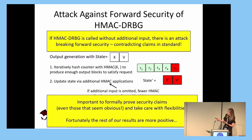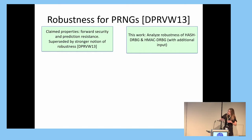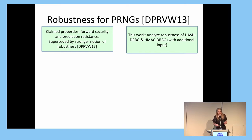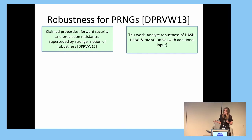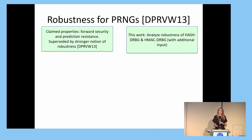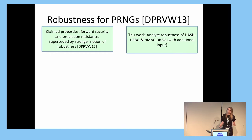That's our surprising negative result, and fortunately the rest of the results in this section are more positive. The standard targets forward security and prediction resistance, but our understanding of what a good generator should achieve has moved on a lot since then. These days, the property we really want from a good PRNG is this notion of robustness, first formalized by Dodis et al. In this work, we analyze the robustness of Hash-DRBG and HMAC-DRBG used with additional input. We focus on these two algorithms because they are hash-based and both fit naturally into the same model.